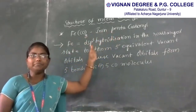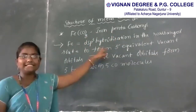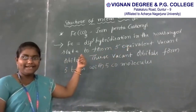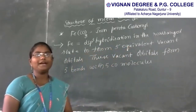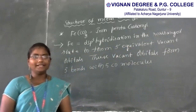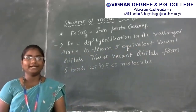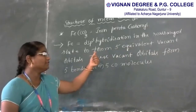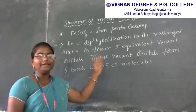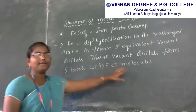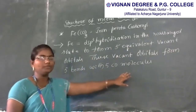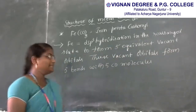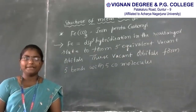In iron pentacarbonyl, iron undergoes DSP3 hybridization in the rearranged state to form 5 equivalent vacant orbitals. These 5 vacant orbitals form 5 bonds with 5 CO molecules. According to this, the structure of iron pentacarbonyl is trigonal bipyramidal.